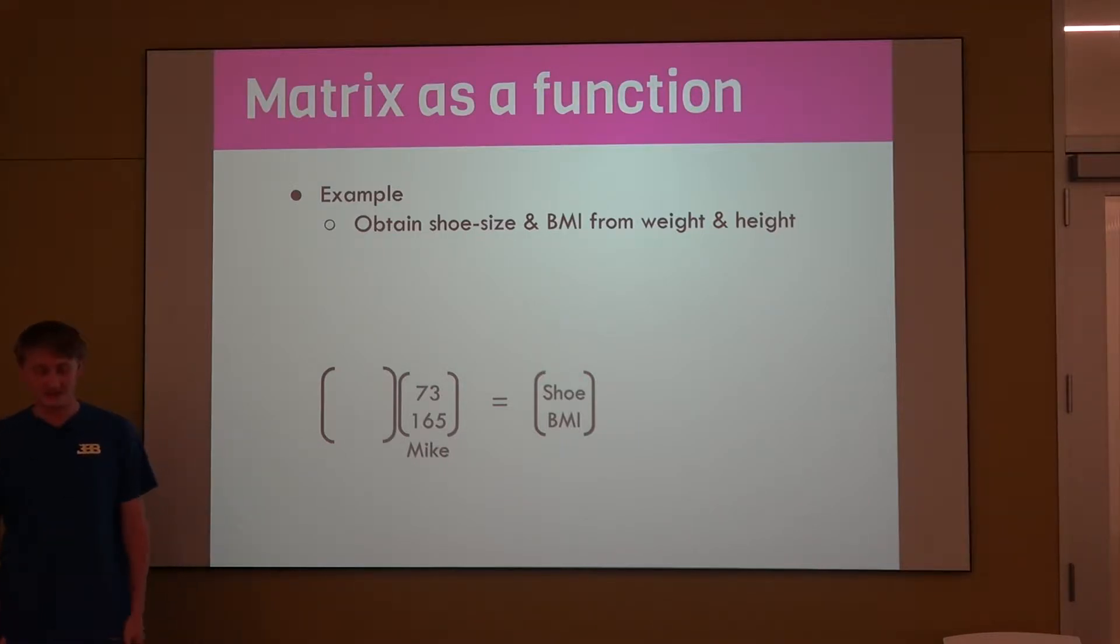Similar to one of the examples in the previous module, we obtained some new feature as a function of our starting point, our starting vector. If I look at Mike and I have his height and his weight, can I estimate his shoe size and BMI? For this example, we'll assume there is some function that's going to tell me, based on your height and weight, what your shoe size and BMI are. We apply this function, this matrix, and from the last video, we know how to do our matrix multiplication. We take 1 tenth times 73 plus 1 fiftieth times 165, and we get the shoe size of roughly 10 and a half. We can do the same thing for the bottom row and this vector, and we'll get a BMI of around 20.